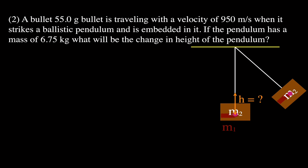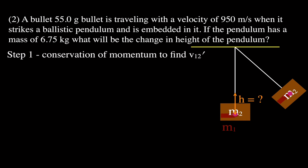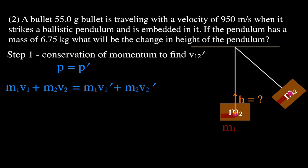In this problem we do the opposite order — we use conservation of momentum first to find the velocity of the combined bullet-pendulum system. Conservation of momentum states momentum before equals momentum after: M1V1 plus M2V2 before equals the combined momentum after. Before the collision, the pendulum has no velocity and no momentum. We simplify and solve for V12, the velocity of the combined system.